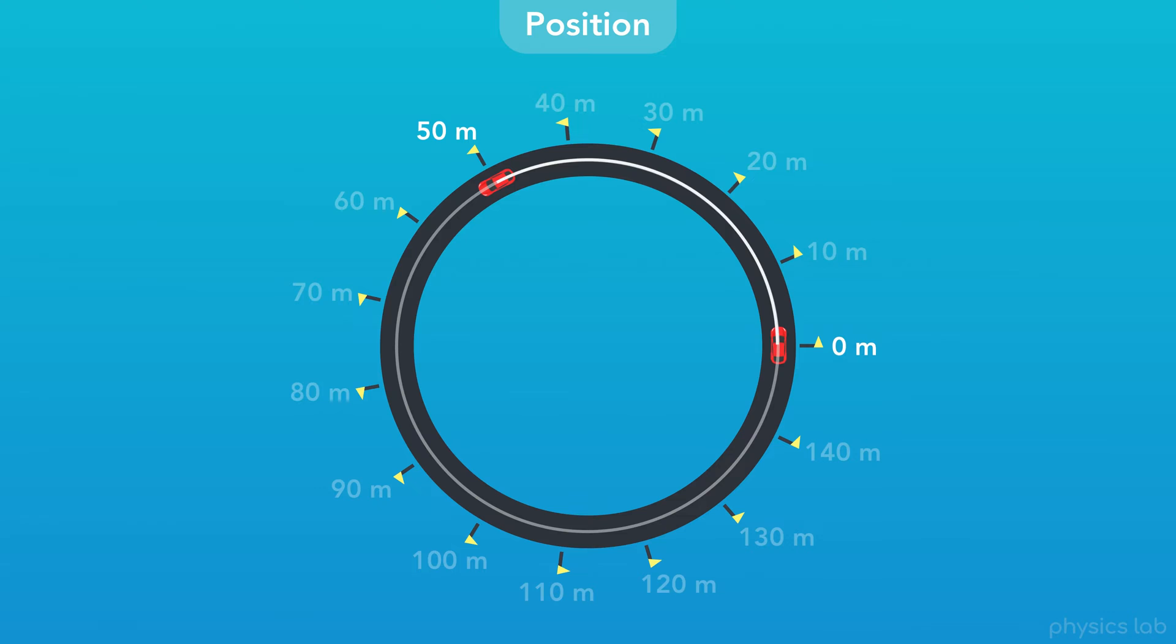A section of a circumference is called an arc, and the length of that arc is called the arc length. So the length of this arc is 50 meters.